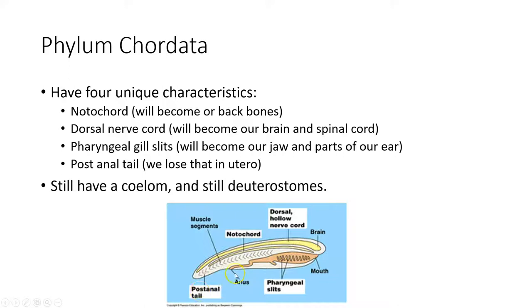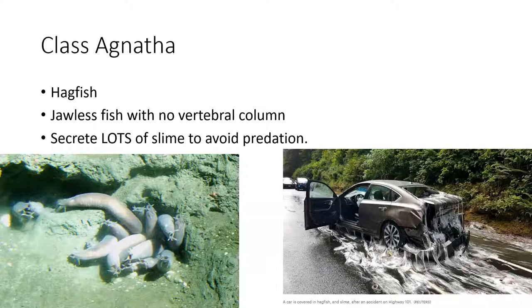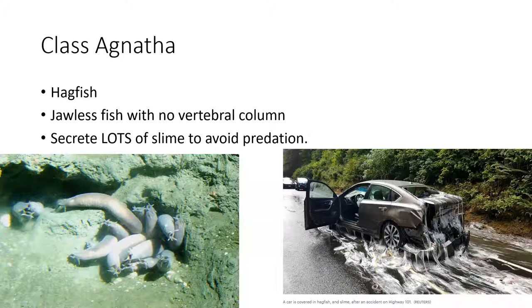Class Agnatha literally means 'no jaw' — these are jawless fish whose mouths are always open. Hagfish are sometimes called eels but are not actually eels. They are decomposers — if something dies and falls to the ocean floor, hagfish clean it up. They secrete enormous amounts of slime when threatened. In July 2017, a truck carrying hagfish overturned, and all the slime-covered fish sloshed onto a car — the hagfish secreted slime in response to sensing danger.